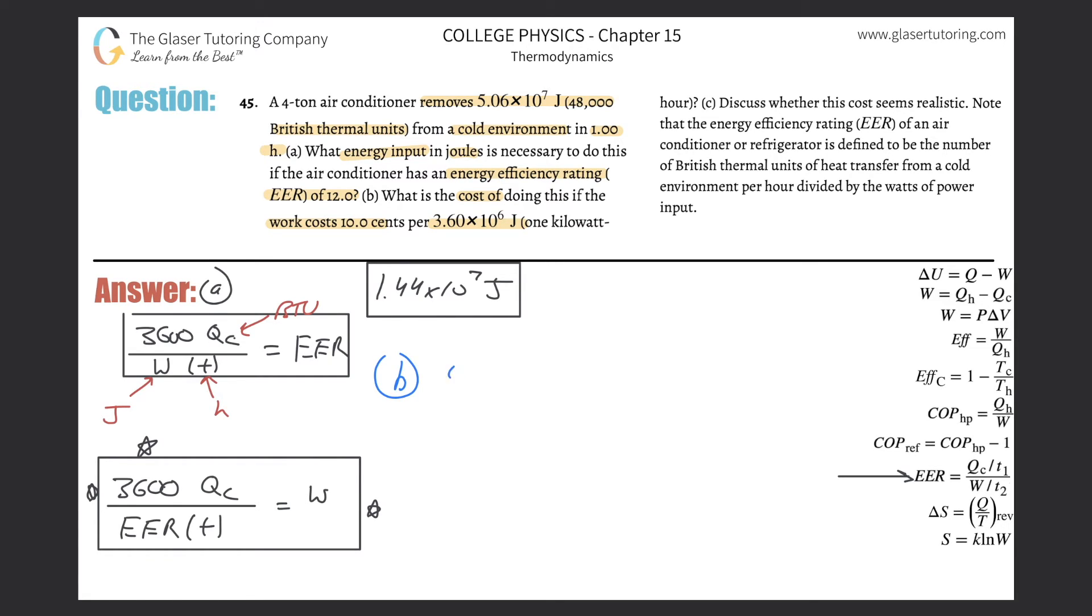So, we are starting with this number of joules being consumed, 1.44 times 10 to the 7 joules, and it's going to be 10 cents per this many joules. So, obviously, this is just a very simple conversion. Per 3.60 times 10 to the 6 joules, it costs about 10 cents in terms of a dollar, that's 0.1, and then the joules would cancel.